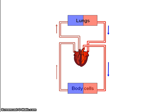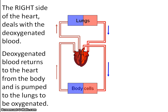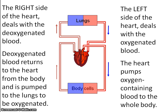Looking at the right and left side of the heart: the right side deals with deoxygenated blood, so the blood has dropped off oxygen towards the cells of the body and comes back to the heart to be pumped to the lungs and become oxygenated. The left side of the heart deals with oxygenated blood, and the heart pumps this to all the cells of the body.